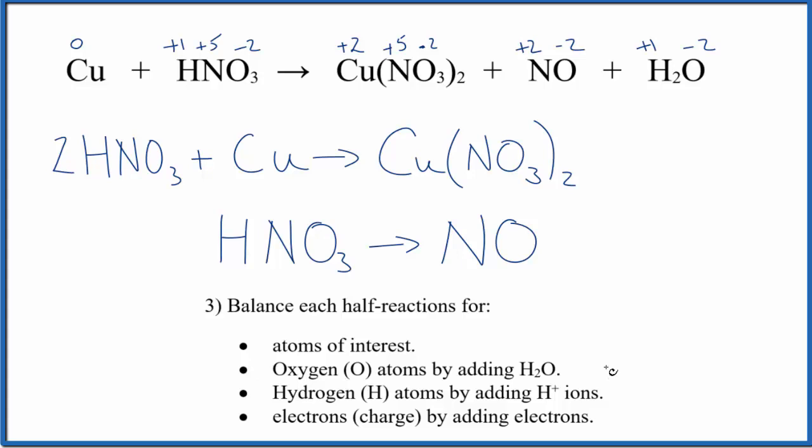Let's balance the oxygen atoms. We have two times three is six on each side. Those are balanced. Three here and one here. So we're going to add two water molecules. Now we have two times one, that's two, plus the one here, three. That balances the three.